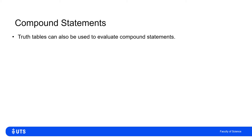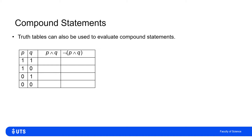Moving on from those simple truth tables, we're going to look at some compound statements and their truth tables. I'd like to start with working out the truth, or falsehood, of NOT(P AND Q). I've bracketed that to say P AND Q is the part I evaluate first and then I negate it. So that's not the same as saying NOT P AND Q — it's saying NOT the evaluation of P AND Q. The first thing I need to work out is the truth of P AND Q.